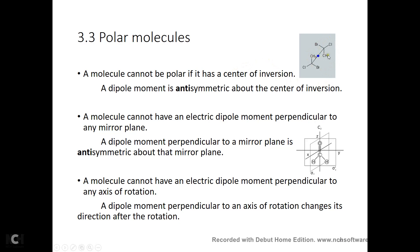This methyl goes to here, this bromine goes to here, this chlorine goes to here. The reason is very simple. If there is a dipole moment, no matter what the direction is, after you do an inversion, the sign of the dipole moment should change — with respect to the center of the inversion.